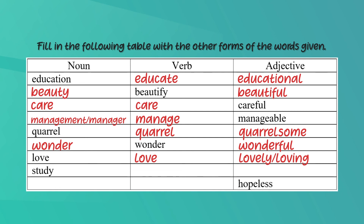Then we have 'study' in the column for nouns — the verb is also 'study' and the adjective is 'studious'. Next you have 'hopeless', which is an adjective — the noun is 'hope' and the verb is also 'hope'. I hope you filled all the blanks correctly.